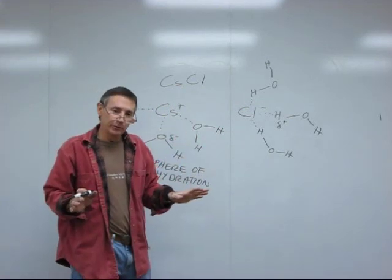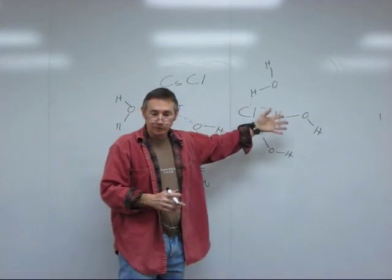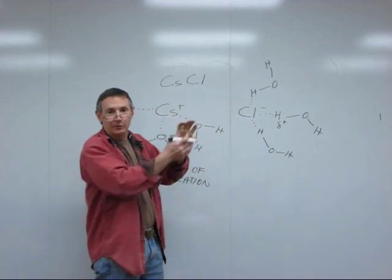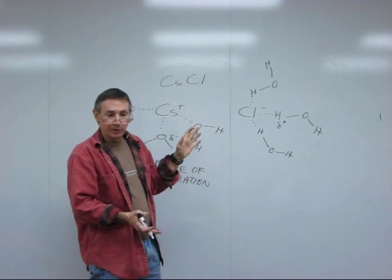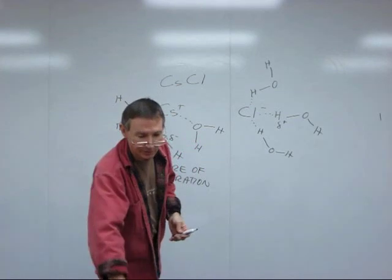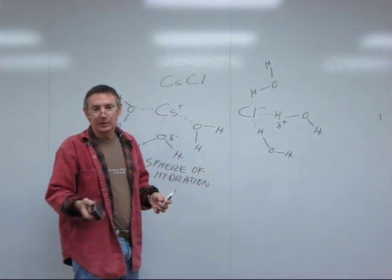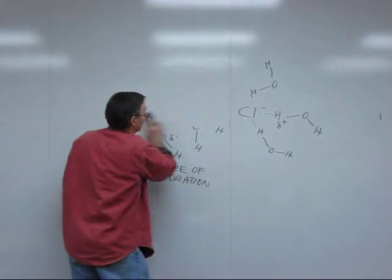Now, if you just dissolve the cesium chloride, then because of the formation of these spheres of hydration, the cesium ions and the chloride ions would all be evenly distributed throughout the tube. That's the way they are initially. But then what you do is you centrifuge them. What Meselson and Stahl did was they put them in an ultracentrifuge, and you're talking about centrifugation at something like 100,000 times gravity.